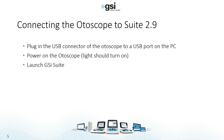Before using the Otoscope, you want to connect it to GSI Suite. First, plug the Otoscope into an available USB port on the PC that has Suite installed. Power on the Otoscope, make sure the light turns on, and then launch GSI Suite. Something to remember: when you're going to use the Otoscope, you want to have it on before you open Suite.